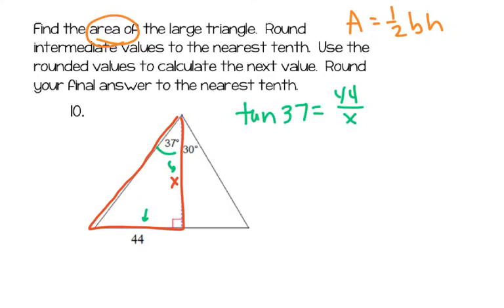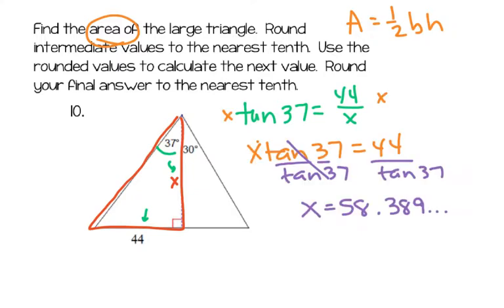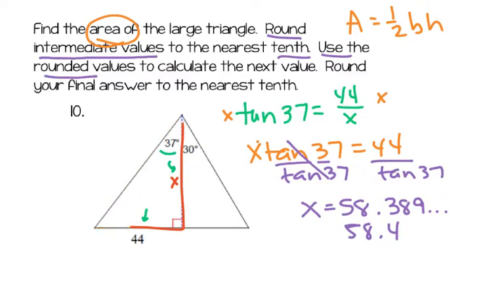Pause the video, find the height of the triangle, and then come back and make sure you've got the right one. What I got is 58.389. The directions say to round the intermediate values — so I'm going to round to the nearest tenth: 58.4 — and use the rounded values to calculate the next value. If you use all those extra decimals, you're going to get a slightly different answer. So to keep consistent, round intermediate values to the nearest tenth and use the rounded value to continue on. The height of that triangle is 58.4.